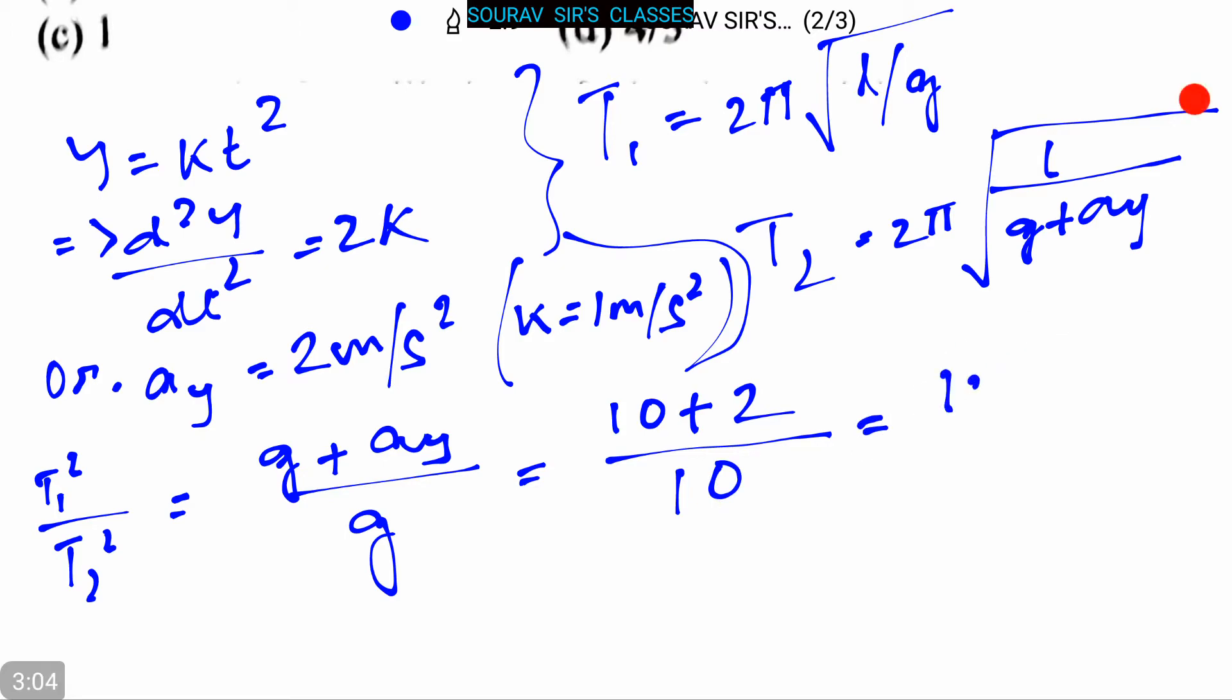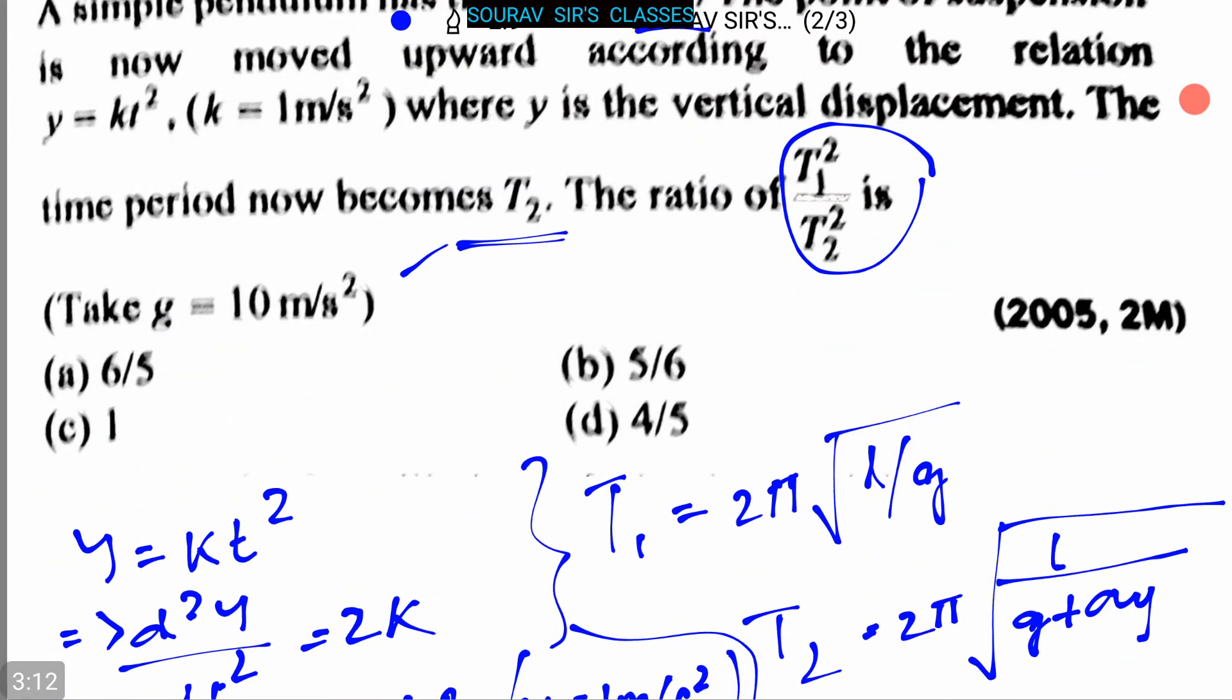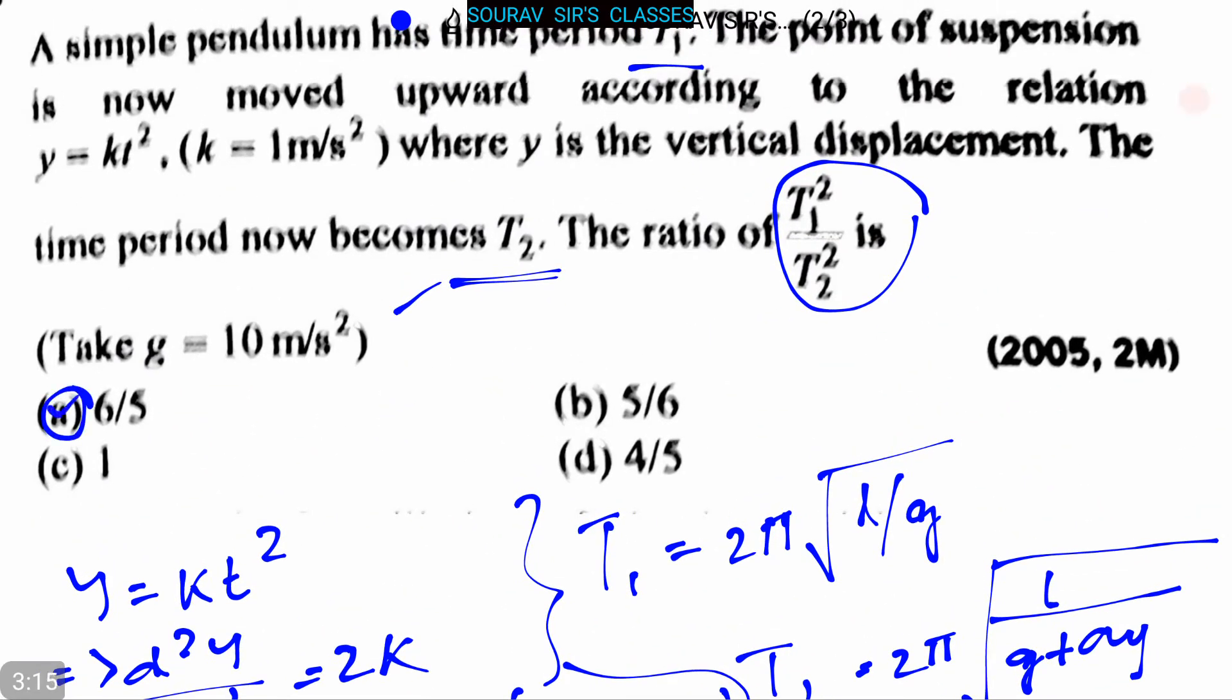The values are (10 + 2)/10 = 12/10 = 6/5. So here option a, that is 6/5, is the correct answer. The ratio of T₁²/T₂² is equals to 6/5.